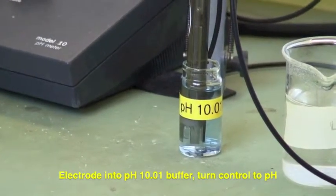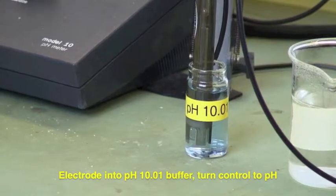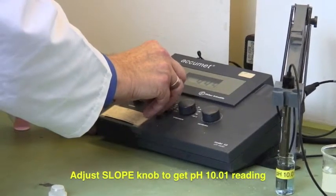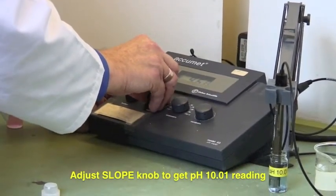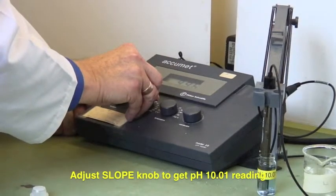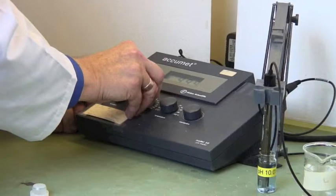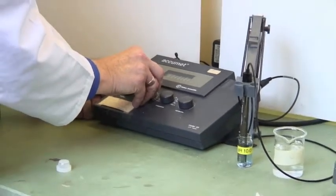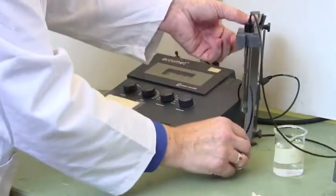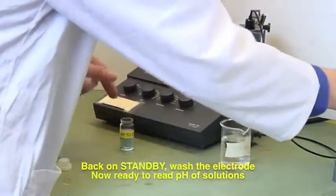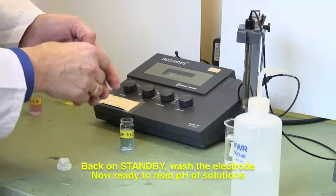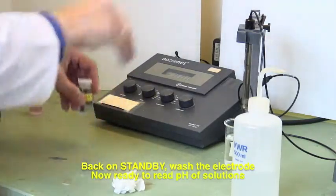Put it on pH mode. Instead of using standardize, use the slope knob to adjust the reading to 10.01. Once adjusted, put it on standby, lift it up, and wash the electrode. You're now ready to take pH measurements.